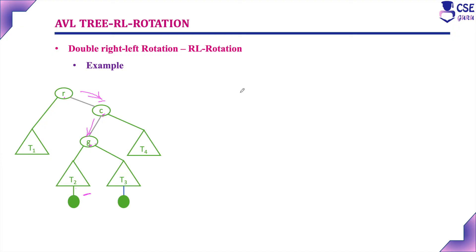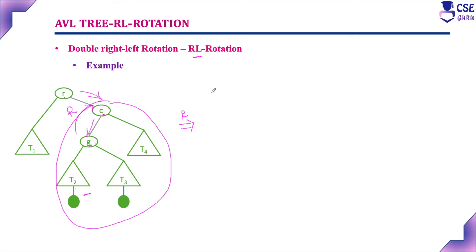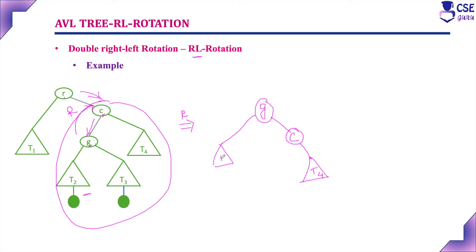We perform RL rotation. First we perform a right rotation on the subtree rooted at C (pointing to G and C). After the right rotation, G moves up to become the root of this subtree. C becomes the right child of G and retains T4 as its right child. The left subtree of G (T2, plus any new insertion) remains as is. The right subtree of G (T3) is attached as the left subtree of C.